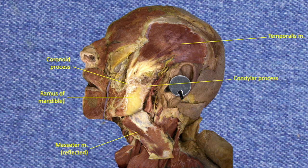And, the condylar process of the mandible — the part of the mandible that articulates to the condylar fossa to form the temporomandibular joint. We're now almost ready to enter the infratemporal fossa, but first we have to remove some bones from the mandible.